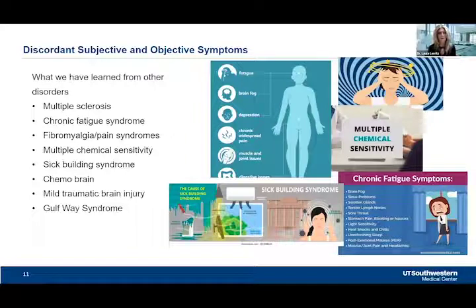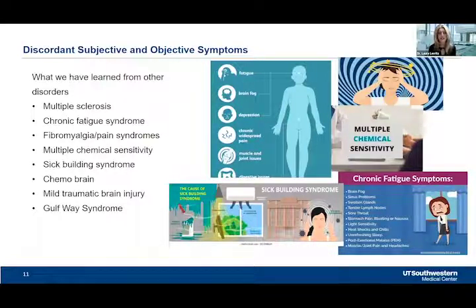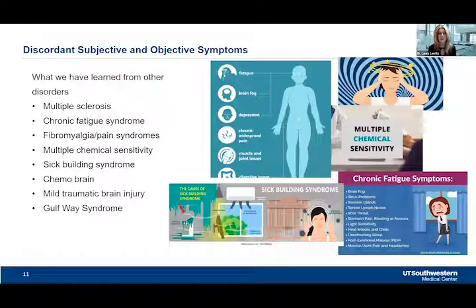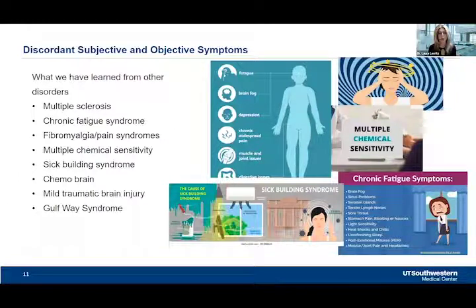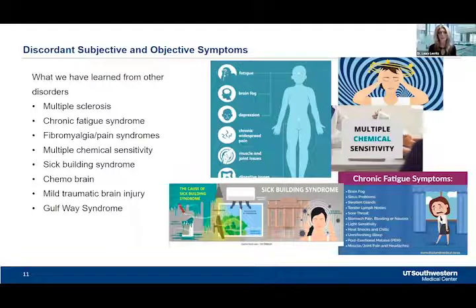There may be other factors related to the disease process that can interfere with different aspects of cognition that we need to be aware of. For example, individuals may have problems with attention that they're not quite aware of, but which influence how somebody performs on memory measures and in everyday life. If you can't attend to something and really focus on processing it, you're not going to be able to remember it at a later time. So that's one reason why we really want to look in depth at all aspects of cognition as part of our evaluation.